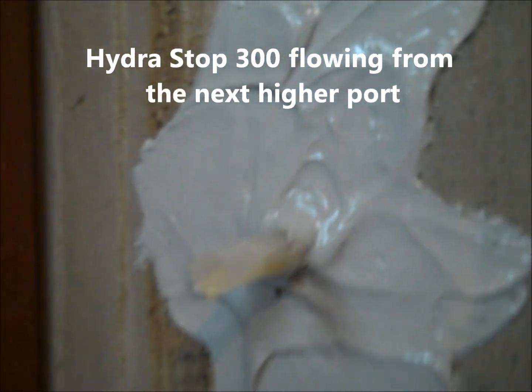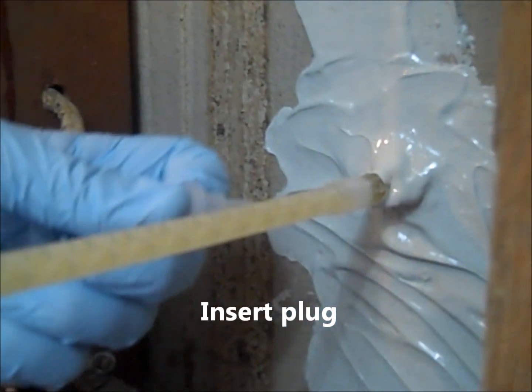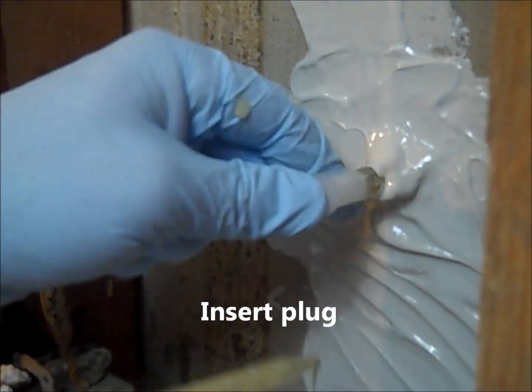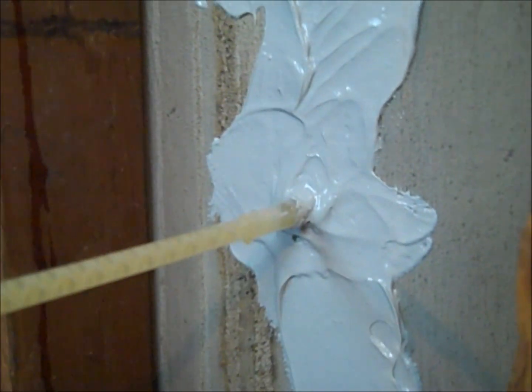Once the Hydrostop 300 begins to flow from the next port, release the pressure on the gun. Place the mixer into the next higher port and place a plug into the injection port. Begin to slowly reapply pressure to the injection gun. Repeat until all the ports have been injected.